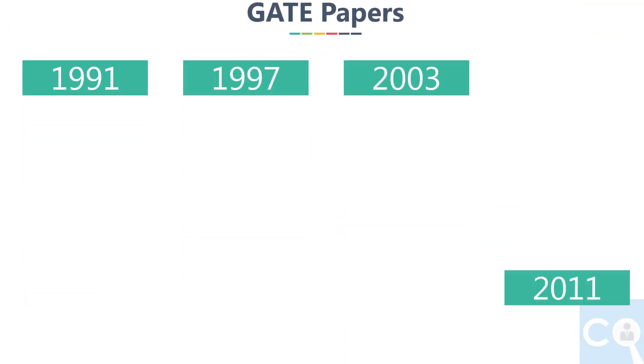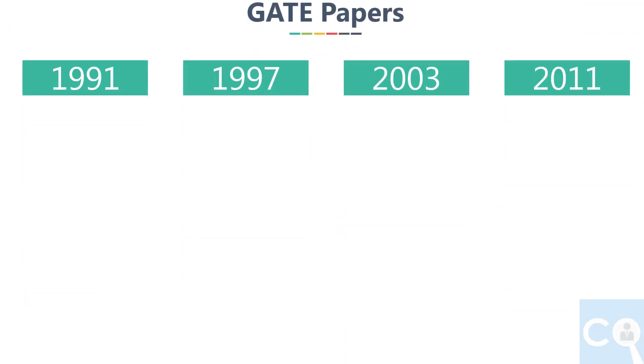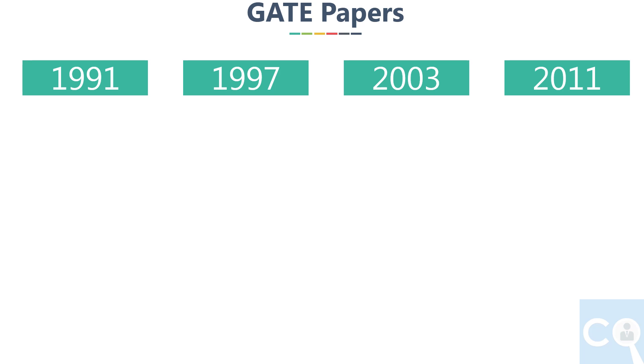So we have only 4 years of data — 91, 97, 2003, and 2011 — which is useful. And from these, we will concentrate only on the 2003 and 2011 data.